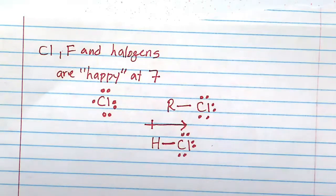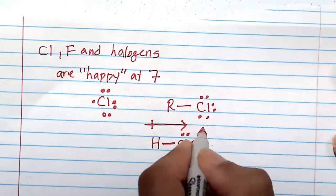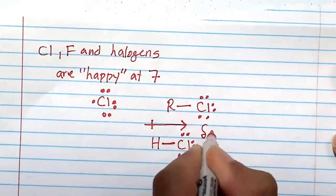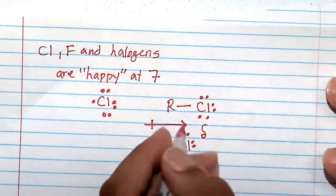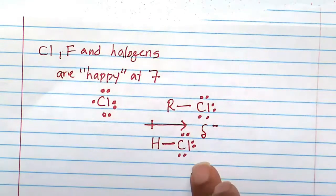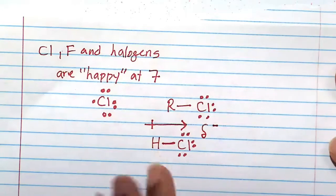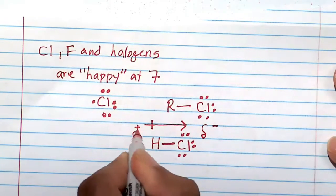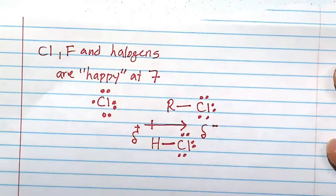What essentially happens is that most of the electron density gets pulled towards the chlorine side, and that is what hydrochloric acid is, or basically anything with a halogen. Because they are so electronegative, they pull. In that manner, what happens is that one part of the molecule, I'm going to use that symbol, it's called delta. One part of the molecule, this end, has a partial negative charge, and the hydrogen end of the molecule has a partial positive charge. A molecule that has one end positive and the other end negative.